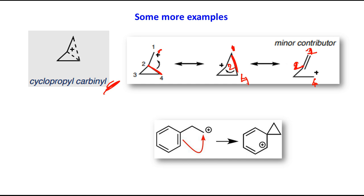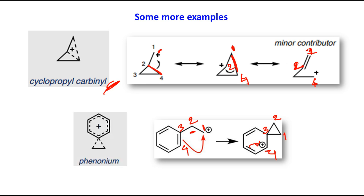The next example: here the positive charge is not on the benzylic carbon but on the adjacent carbon. With the numbering 1, 2, 3, 4 — if the C3–C4 pi bond breaks, positive charge goes to C4 and a new sigma bond forms between C3 and C1. From this, further resonance structures can be drawn by shifting the sigma bond, similar to normal carbocation resonance in electrophilic substitution reactions. More resonance structures can be drawn, and taking the average gives the phenonium ion.